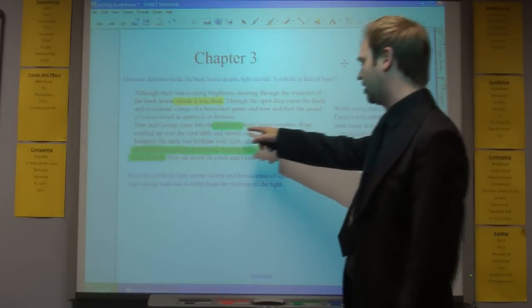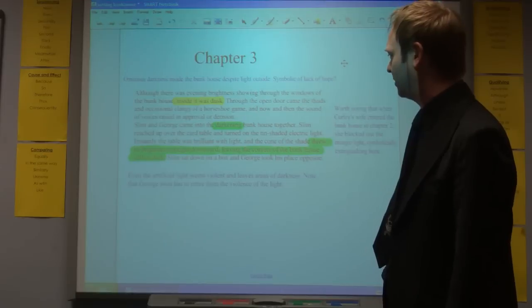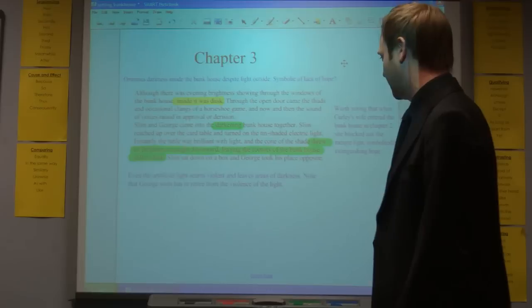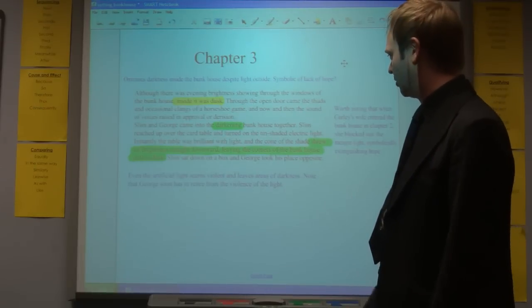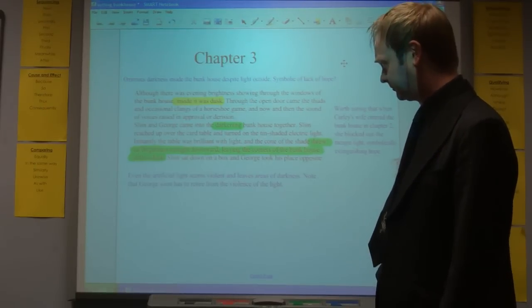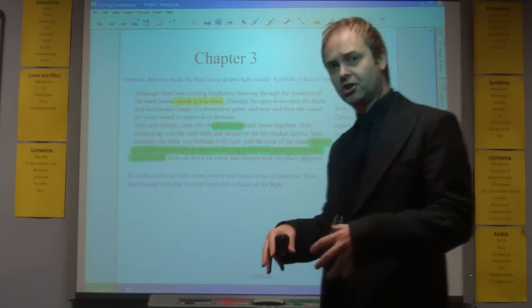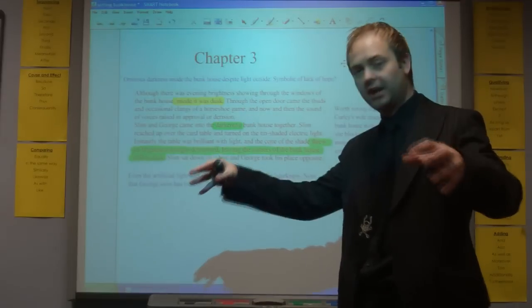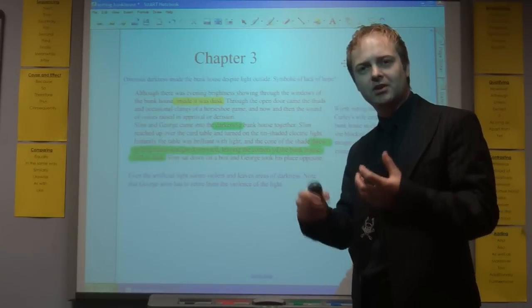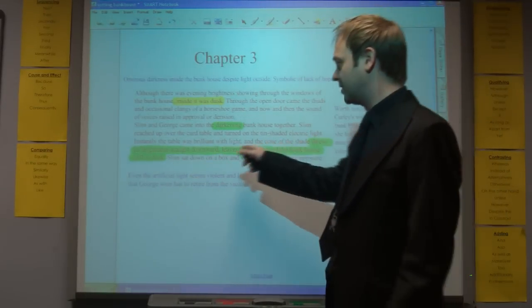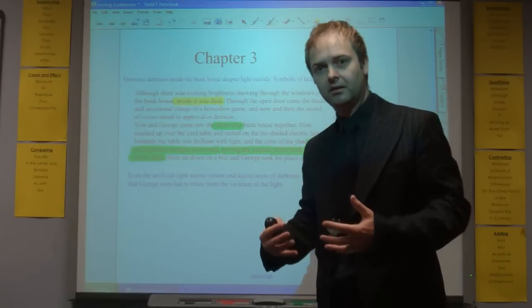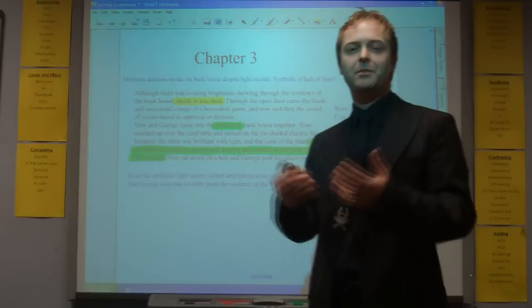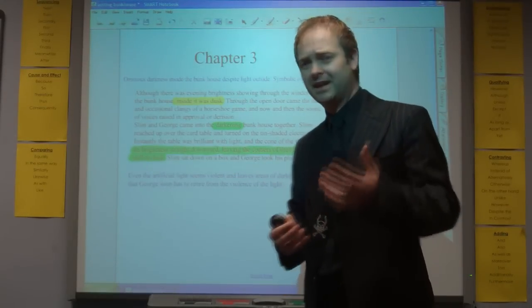Slim and George came into the darkening bunkhouse together. Slim reached up over the card table and turned on the tin-shaded electric light. Instantly, the table was brilliant with light and the cone of the shade threw its brightness straight downward, leaving the corners of the bunkhouse still in dusk. Notice it threw its light straight downwards. Even the artificial light seems to be violent. It leaves these pockets of darkness around the place. So there's still that sense of the ominous. It's also worth noting that just after that, George has to retire from the light. It's too intense for him. He has to back away from it. So this isn't something that's dispelling darkness. It's almost something threatening in itself.